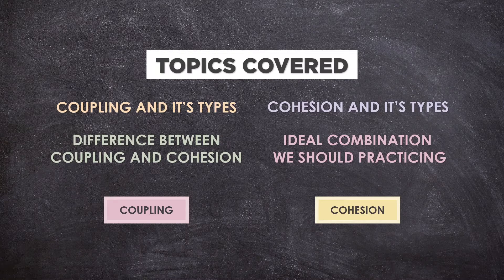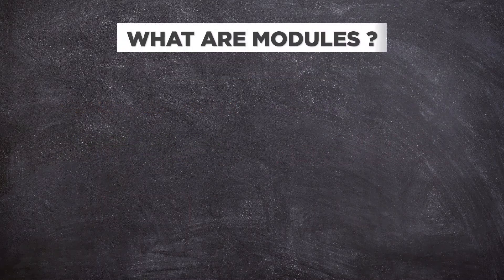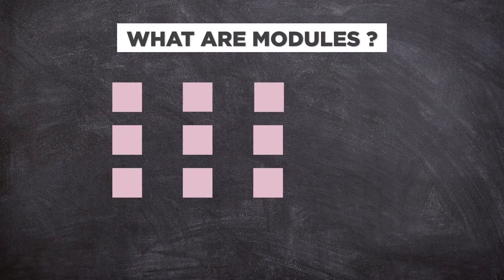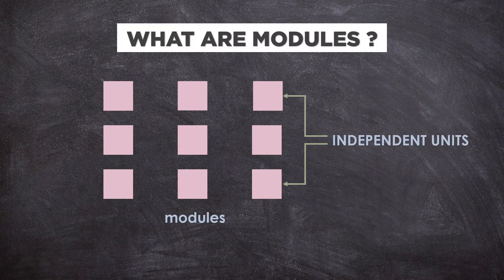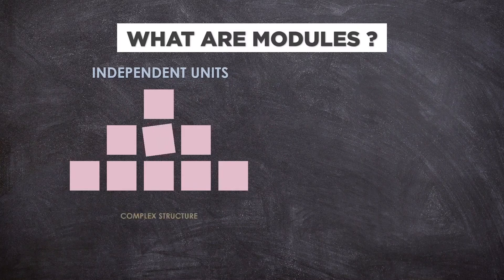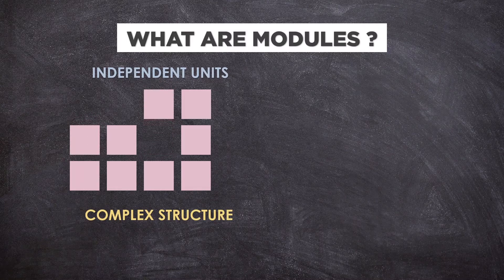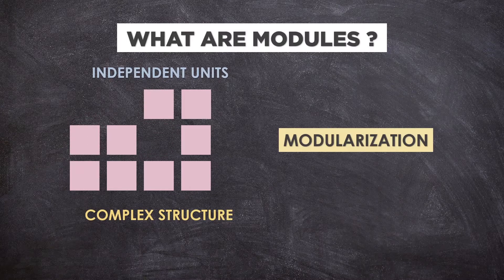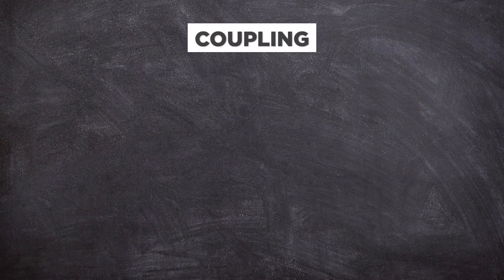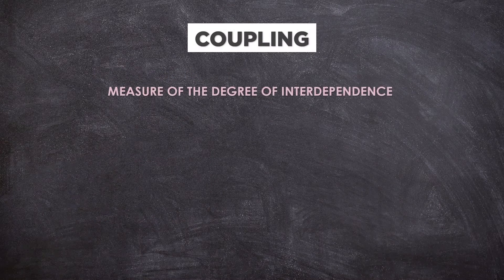Before jumping into the topic, let's first know what modules are. Modules are independent units that can be used to construct a more complex structure. The process of dividing a software system into multiple independent modules where each module works independently is known as modularization.